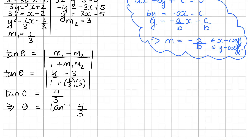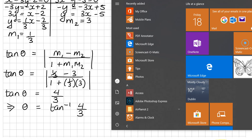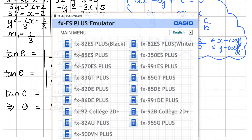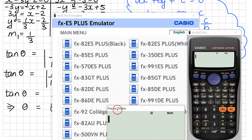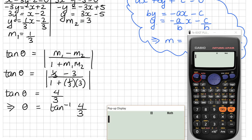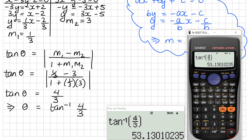So we go to our calculator and get the inverse tan of 4 over 3. I just closed my calculator so I'm going to press inverse tan of 4 over 3, close my bracket, press equals, and I get 53.13 degrees.